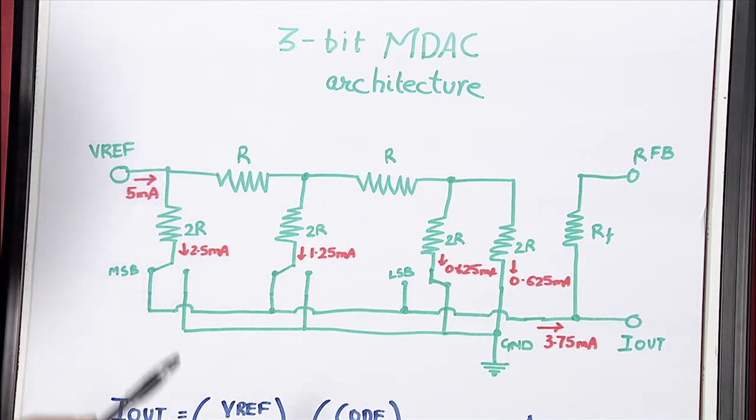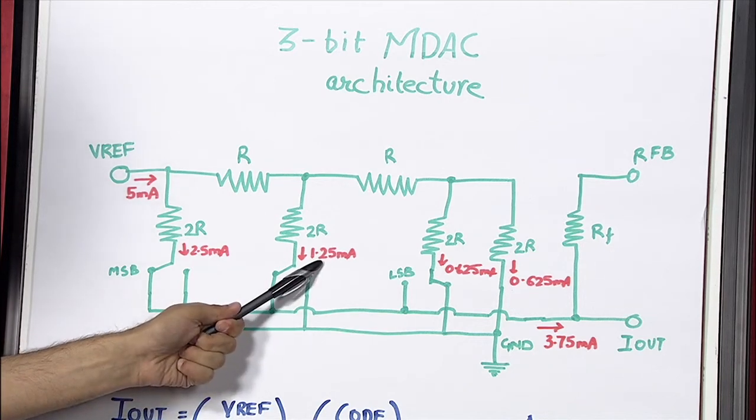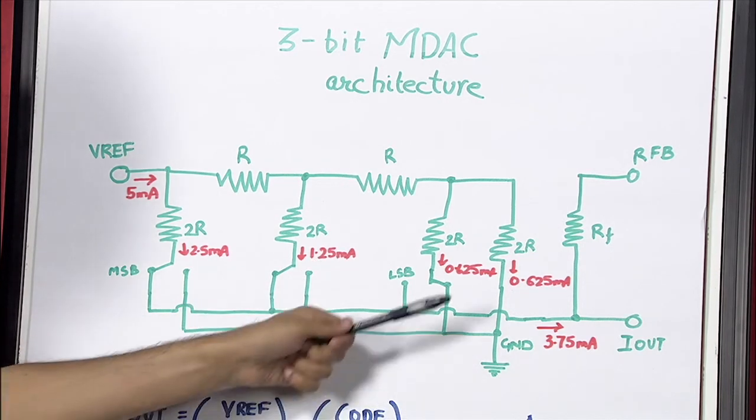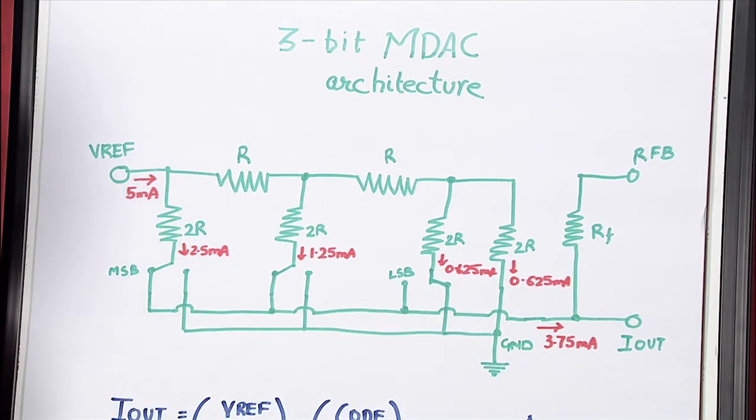So, using that, we calculated that the current flowing into the MSB leg is 2.5 mA, this leg 1.25 mA, and these two legs as 0.625 mA.